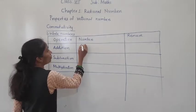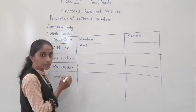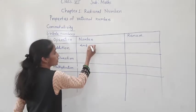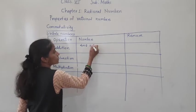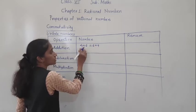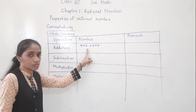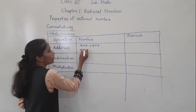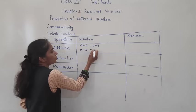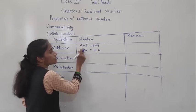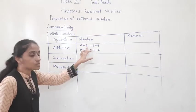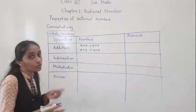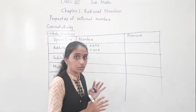For example, take 4 plus 6. This property shows it is equal to 6 plus 4. These are whole numbers. 4 plus 6 equals 10, and 6 plus 4 also equals 10. Even when you change the order, the answer remains the same.